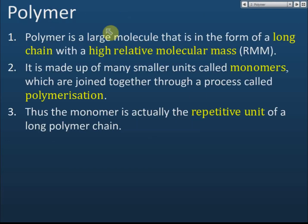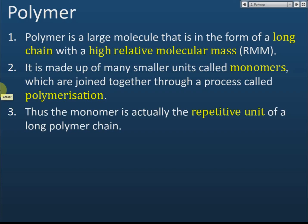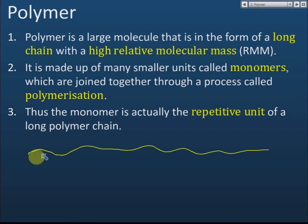A polymer is a large molecule in the form of a long chain with a high relative molecular mass. It can contain a few thousand atoms inside, making it a very large molecule. Because it has thousands of atoms, the relative molecular mass can be very high. A polymer is made up of many smaller units called monomers, which are joined together.